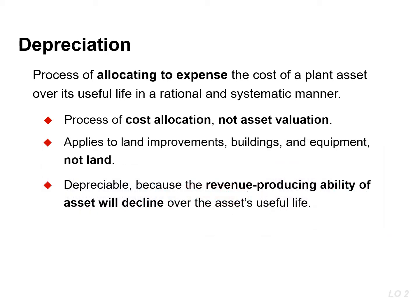Depreciation applies to three classes of plant assets – land improvements, buildings, and equipment. Each of these classes is considered to be a depreciable asset because the usefulness to the company and the revenue-producing ability of each class declines over the asset's useful life because of wear and tear and from obsolescence, which means an asset becomes out of date before it physically wears out.